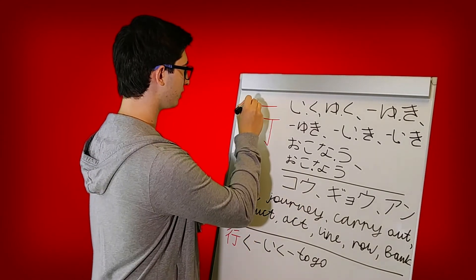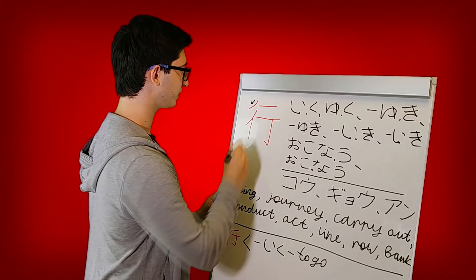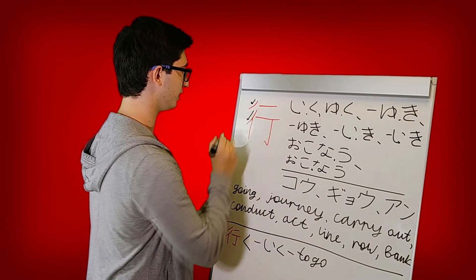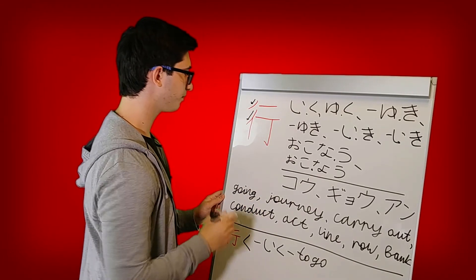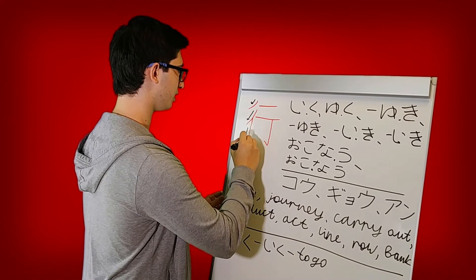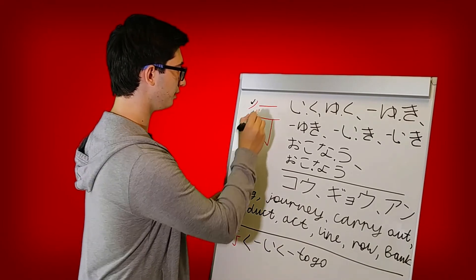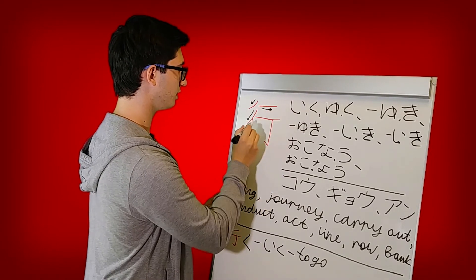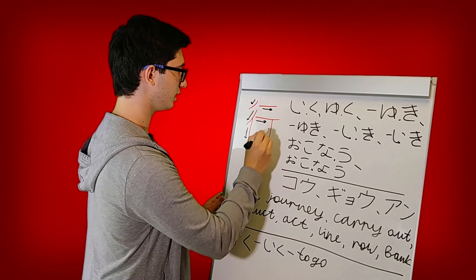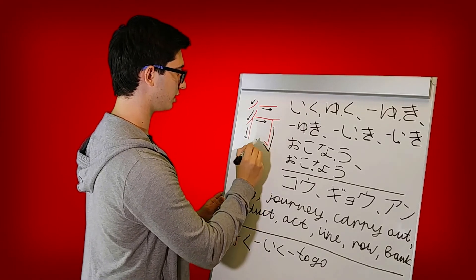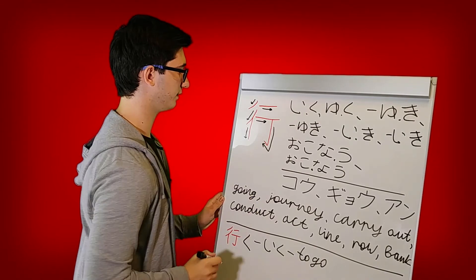So let's do that again. So this one goes down and to the left. Then this one also down and to the left, but a little bit more sloped. Then this one goes top to bottom. Then this one goes left to right. This one also left to right. And this one goes top to bottom. And then it goes up and to the left at the end.